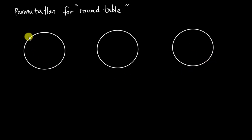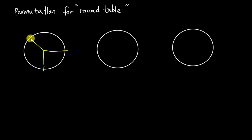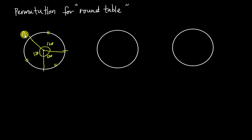We can place three of them like this: position one, position two, position three. This is the center point. The distance for position one, position two, and position three are the same — 120 degrees each — so they have the same arc length. I place person A, person B, and person C.